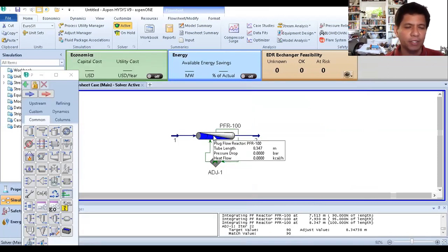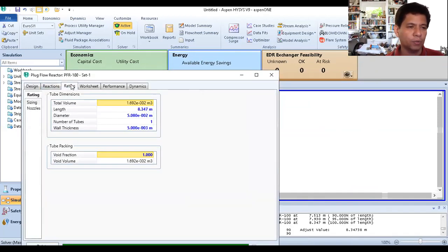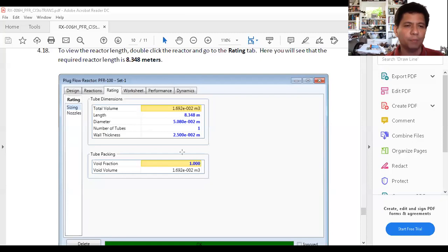You can check the length of the reactor. Go to rating, and there it is: 8.347 meters. We can check that this is similar to the tutorial. Check the tutorial: 8.348 meters. It's 8.348 meters in the tutorial as well. So practice, practice. It's quite easy. So for our midterm: shortcut distillation, rigorous distillation, CSTR, and PFR. That's on Thursday, 1 to 4 p.m.